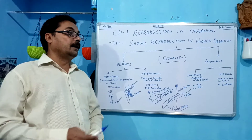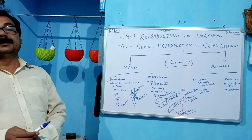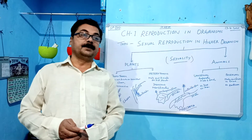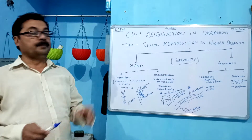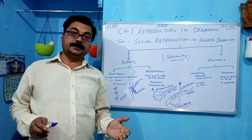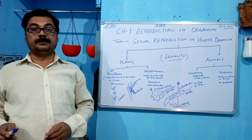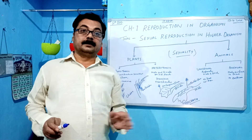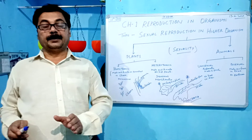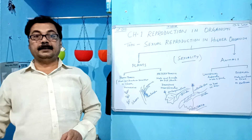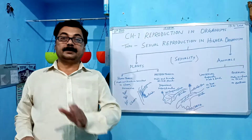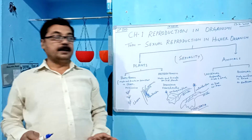Before sexual reproduction takes place, organisms attain sexual maturity. Sexual maturity is known as the juvenile phase. The juvenile phase applies in animal cases. In plants, the juvenile phase is known by another name, the vegetative phase. There are three phases: the juvenile phase, the reproductive phase, and senescence. These three phases are part of the sexual reproduction cycle.